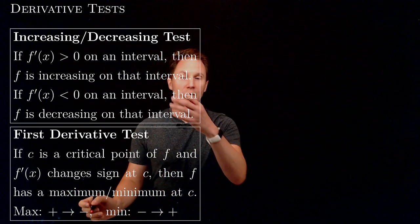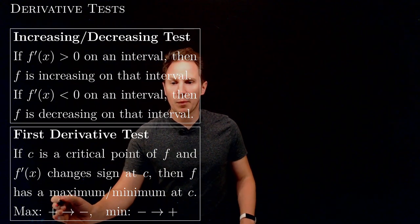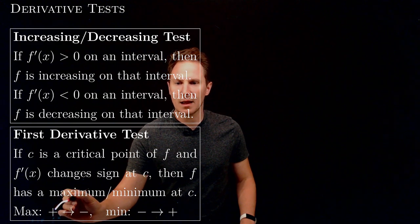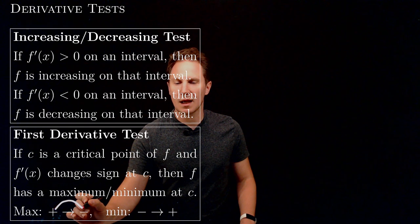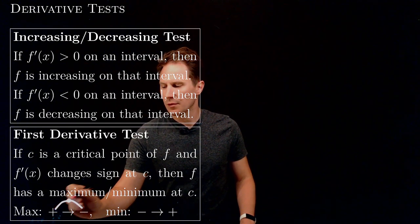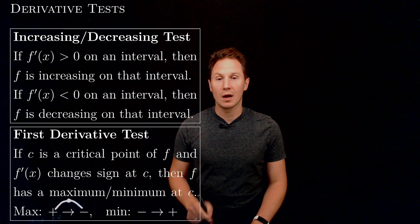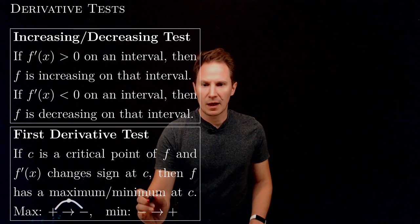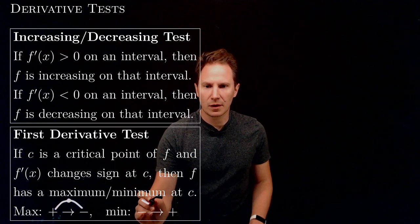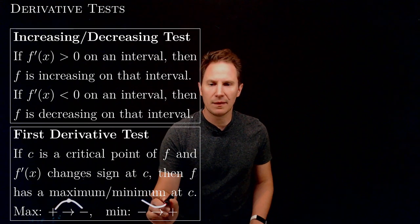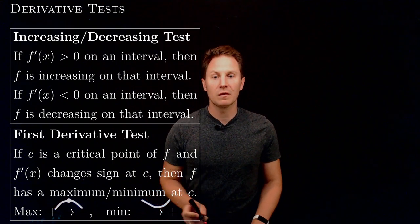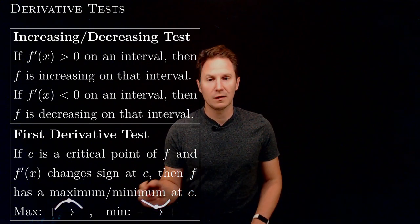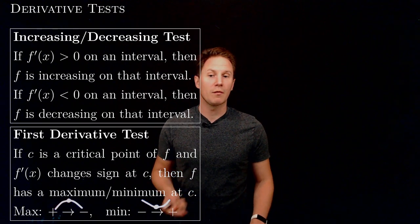This makes sense when you compare it with the increasing-decreasing test, because a positive first derivative means that the function is increasing and then goes to decreasing as the first derivative becomes negative, so the function must have a maximum at that point where the derivative changes sign from positive to negative. Whereas the first derivative being negative means the function is decreasing, and then changing sign to positive means the function starts increasing, so the function must have a minimum.